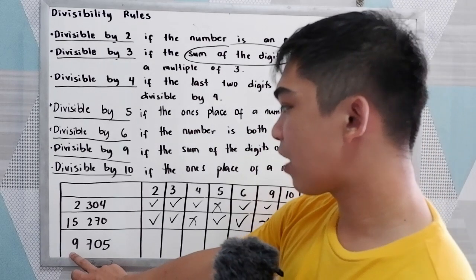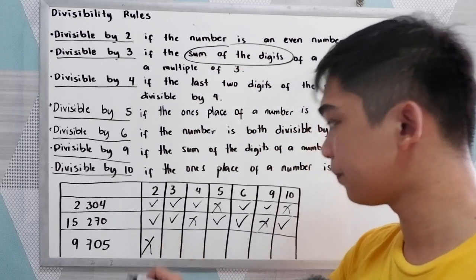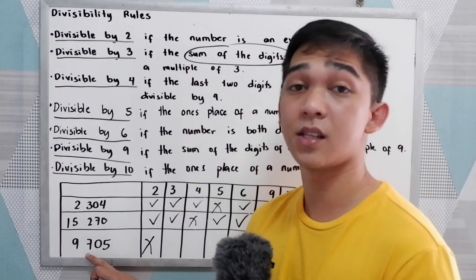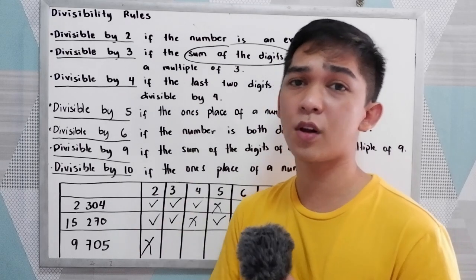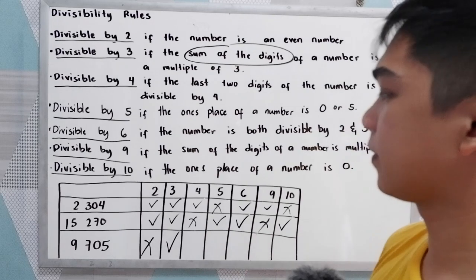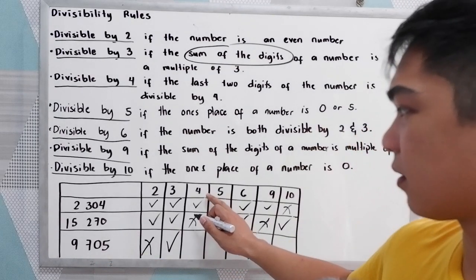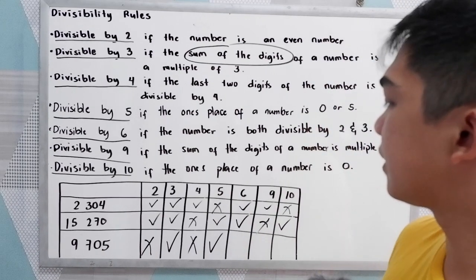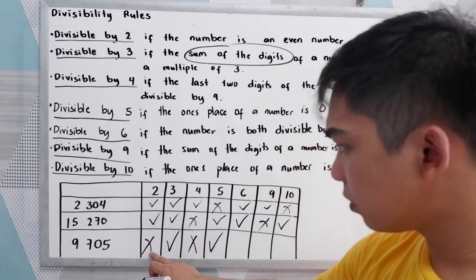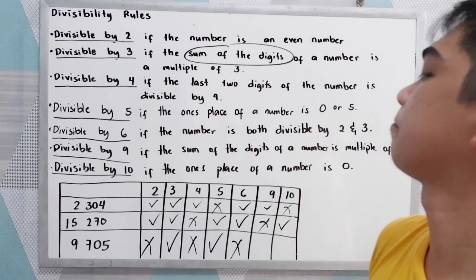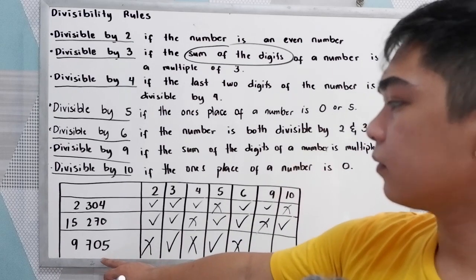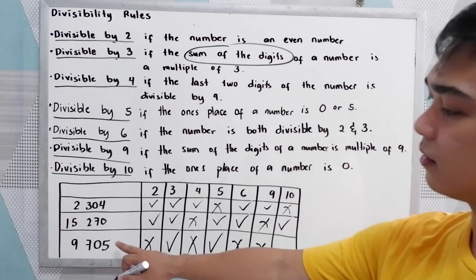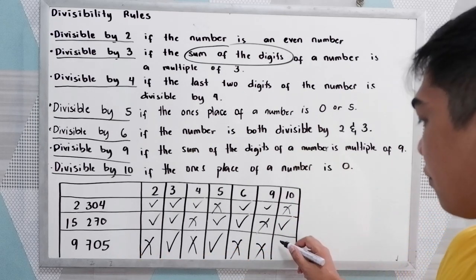Last number is 9,705. It is not divisible by 2. For divisibility by 3, the digit sum is 9 plus 7 plus 0 plus 5, which equals 21 — a multiple of 3, so yes. The last two digits are 05; checking divisibility by 4 — no. It ends with 5, so it is divisible by 5. Since it is not divisible by 2, it is not divisible by 6. The digit sum is 21, which is not a multiple of 9 — so no. The number does not end with 0, so it is not divisible by 10.